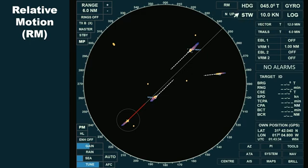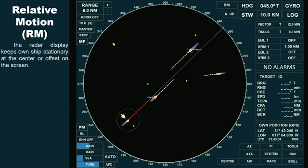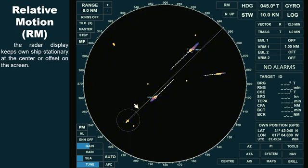In relative motion mode, the radar display keeps our ship stationary at the center, or offset on the screen. As a result, own ship will not display a trail, even if the trail is activated, because own ship is treated as a fixed object. However, the true vector will still appear, as it represents own ship's actual movement relative to the ground. If the vector is switched to relative, no vector will be shown for own ship since she is assumed stationary.